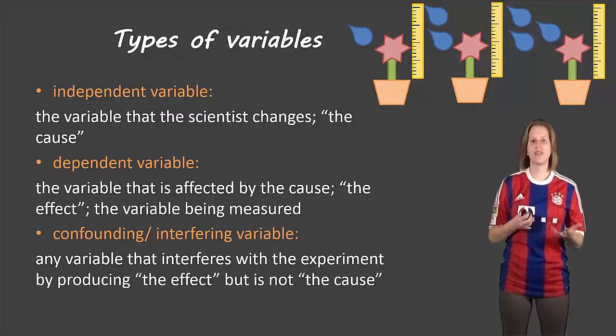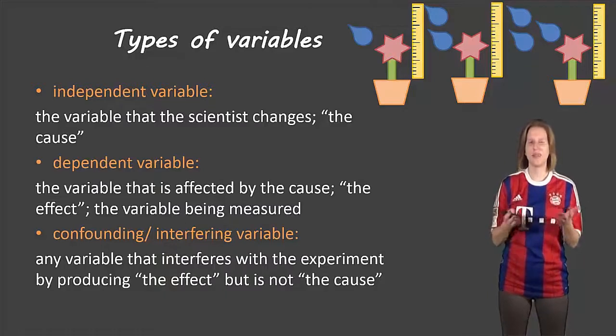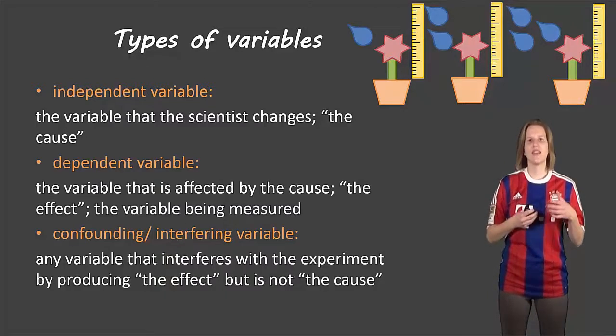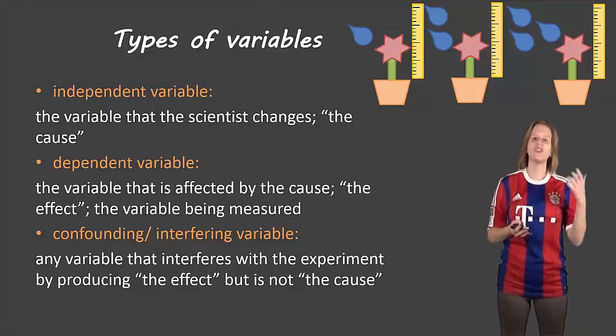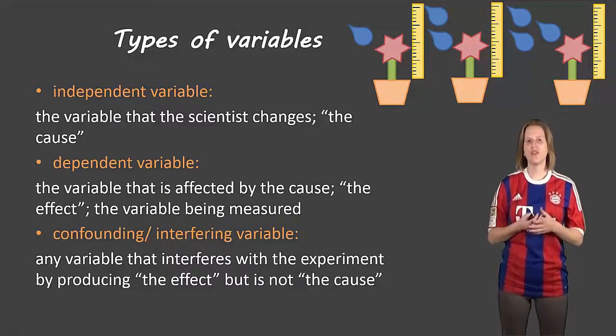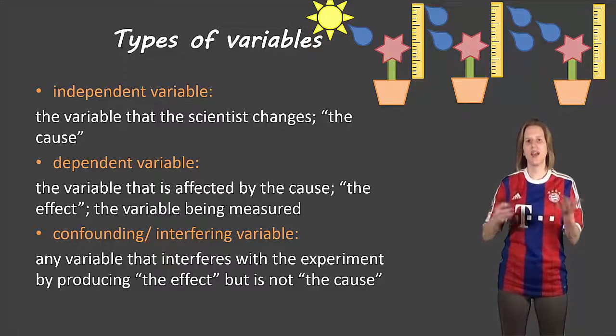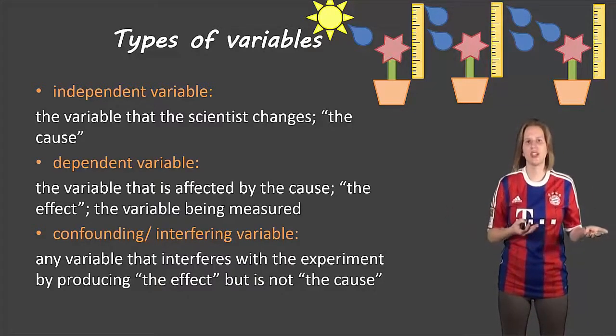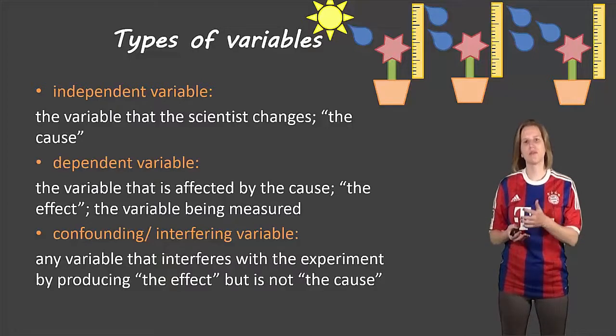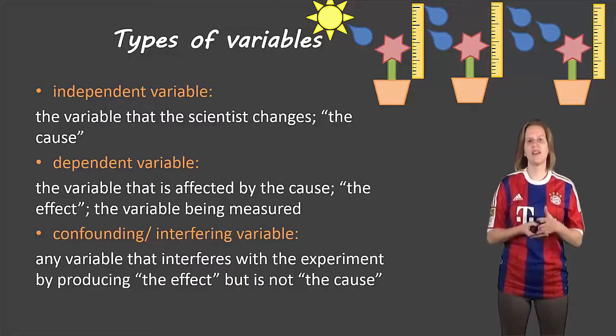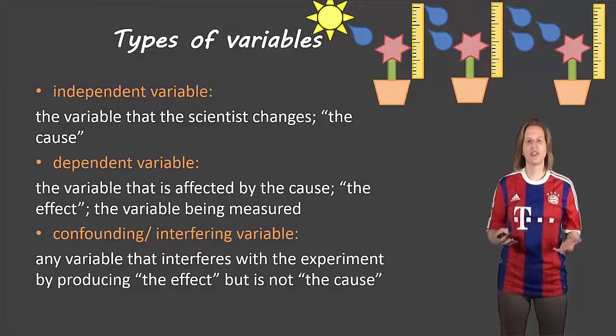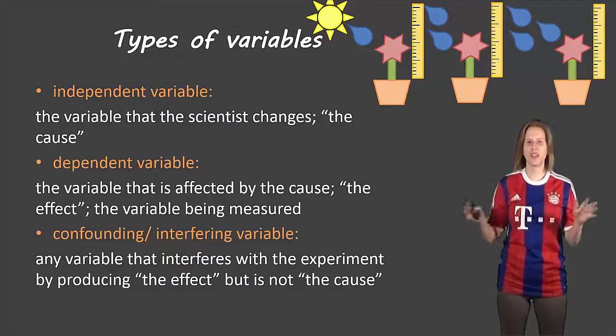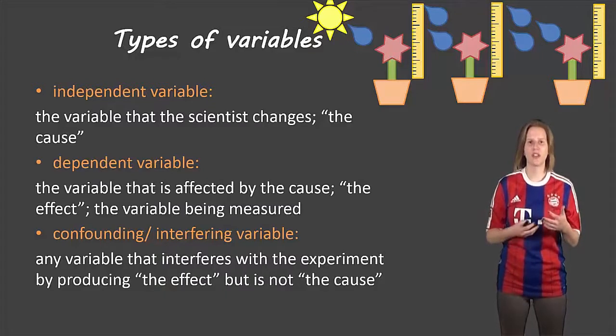And then finally there's something called a confounding variable or an interfering variable. These are things that have an effect that's very similar or exactly the same as what we're measuring, but it's due to a different independent variable. For example, let's say there's some sunlight. If one of the plants is very close to the sun, another one is further away, and maybe the third one is in the shade, at the end of the day we can't say whether it was the amount of water or the amount of sun that affected the plant's growth because both of them can affect the plant's growth. So normally we would have to control for these variables and make sure they all get the same amount of sunlight to make sure that our experiment is proper.